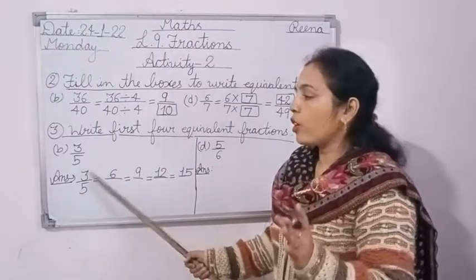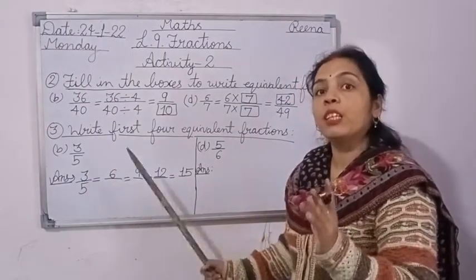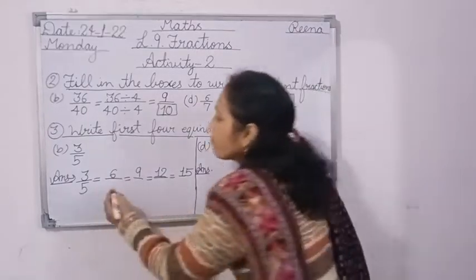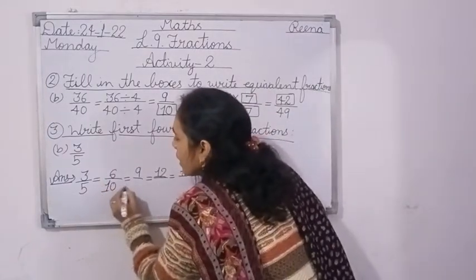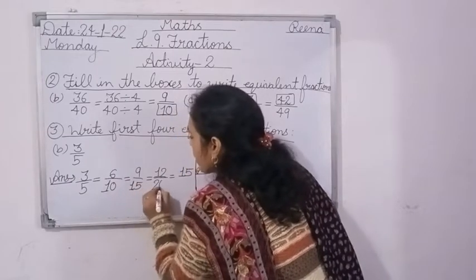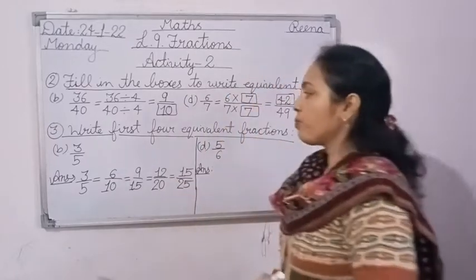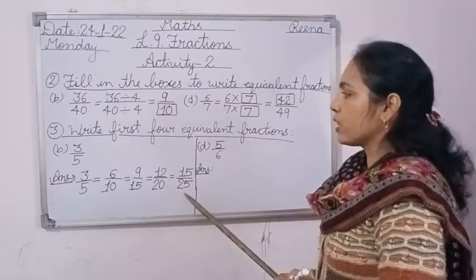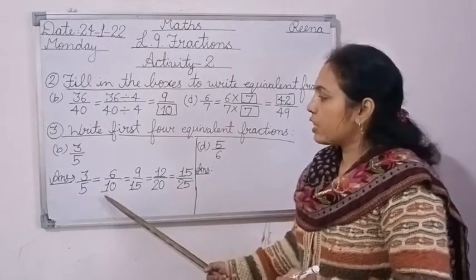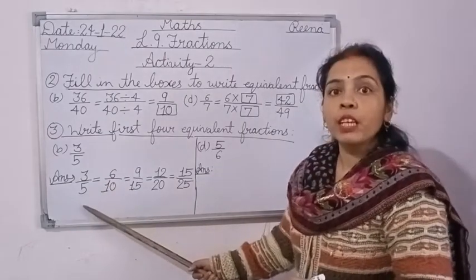For the denominator, read the table of 5: 5×1=5, 5×2=10, 5×3=15, 5×4=20, 5×5=25. These 4 fractions — 6/10, 9/15, 12/20, 15/25 — are all equivalent to 3 upon 5.